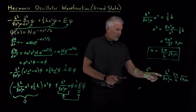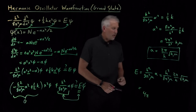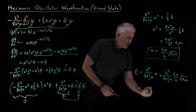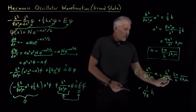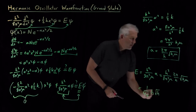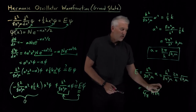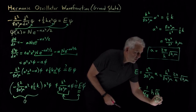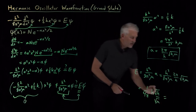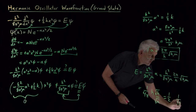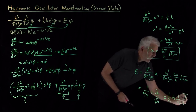Substituting the value of alpha: we have h squared over 8 pi squared mu times 2 pi over h times the square root of k mu. The 2 divided by 8 leaves a 4 in the denominator; pi divided by pi squared leaves pi in the denominator; h squared divided by h gives one factor of h in the numerator. For mu, the square root of mu divided by mu leaves 1 over the square root of mu. Rearranging, we write this as one-half times 1 over 2 pi, times h, times the square root of k over mu.